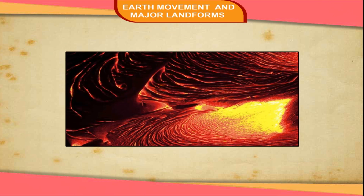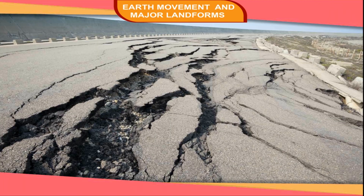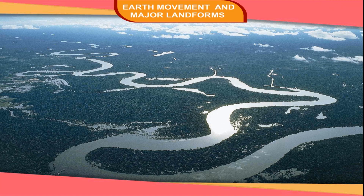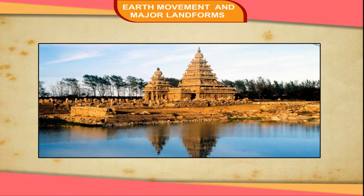Earth Movements. The powerful endogenic forces operating from within the crust are also known as tectonic movements. Tectonic movements can be divided into two types: sudden movements and slow movements. Sudden movements bring abrupt changes on the Earth's surface. Earthquakes and volcanic eruptions are examples of these movements. Such changes can cause a part of the land to be fractured or the course of a river to be changed. Some changes in the Earth's crust are so slow that they take hundreds of years to become noticeable. The Mahabalipuram temple which now stands in the sea is an example of this movement.